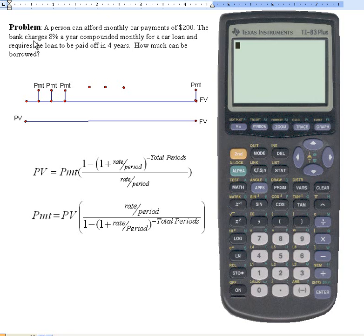The problem is that a person can afford car payments of $200 a month. The bank charges 8% a year compounded monthly for a car loan, and the requirement is that the loan should be paid off in four years. So the problem is, how much can this person borrow?